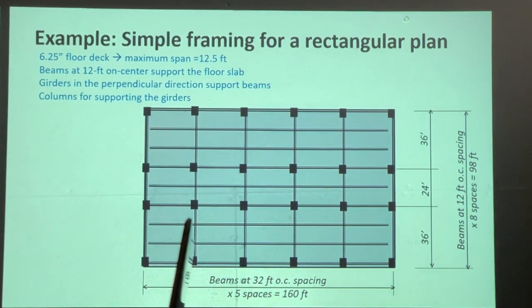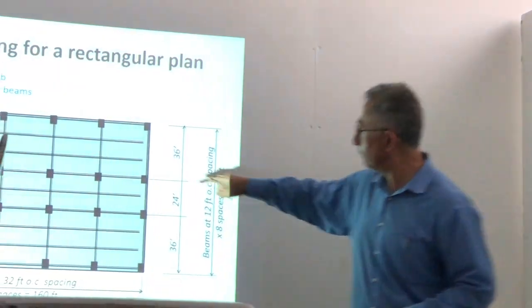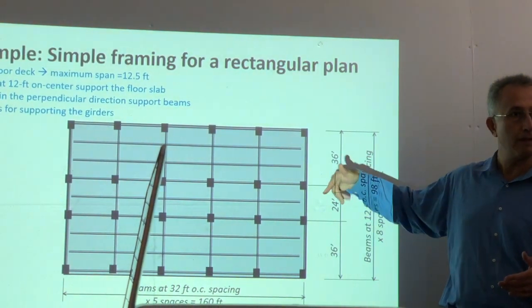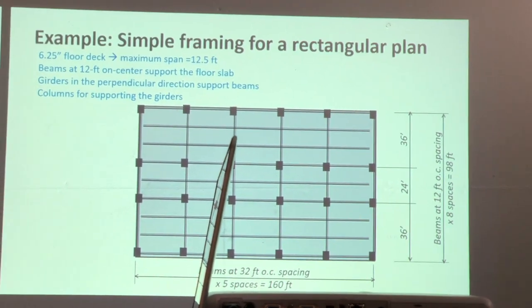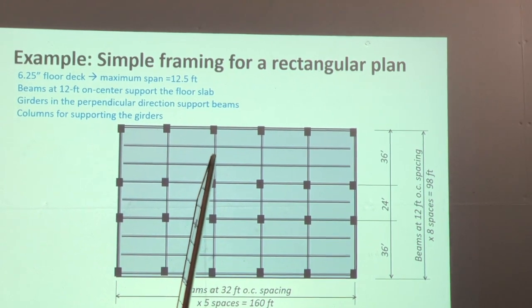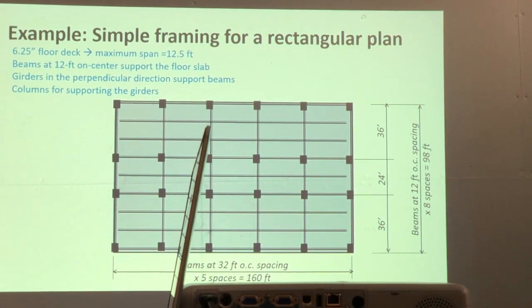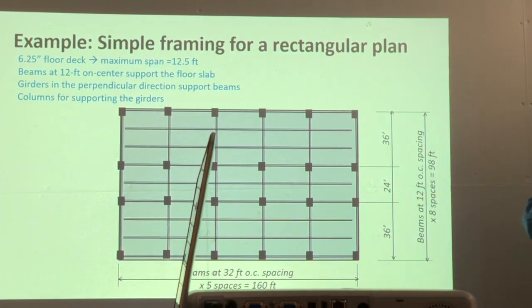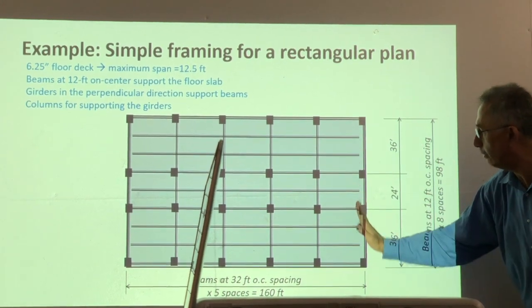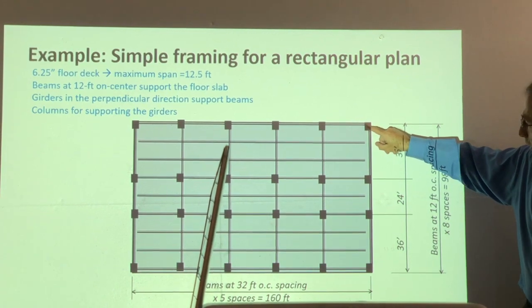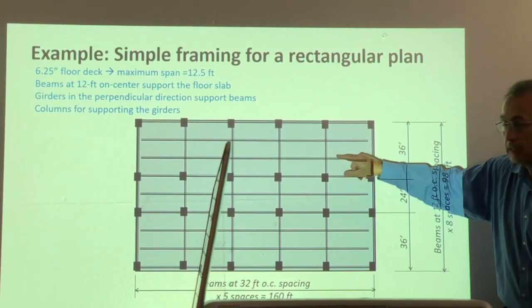Twelve feet on center means the distance from center of one beam to the center of its neighbor is 12 feet — a common nomenclature used in both structural and architectural drawings. Now that I have these beams, I need a system to hold them up. You cannot afford columns at 12-foot on center — your building would be full of columns. So we add a second set of elements called girders, running north-south, whose job is to support the beams.